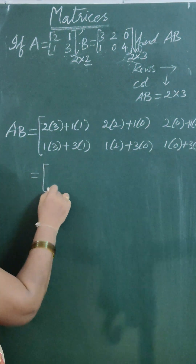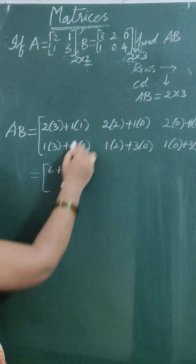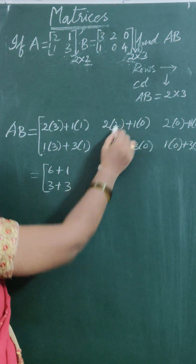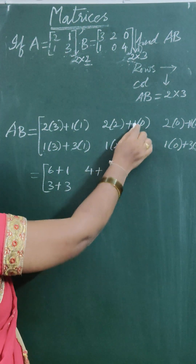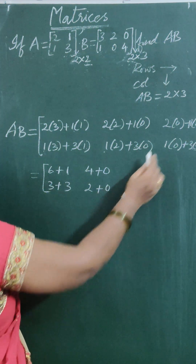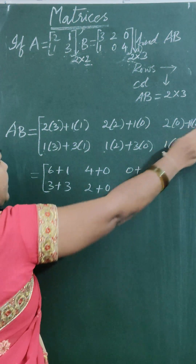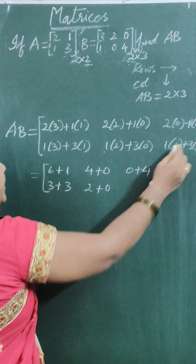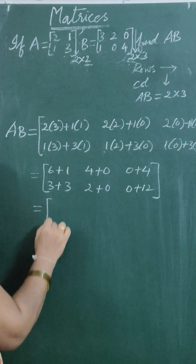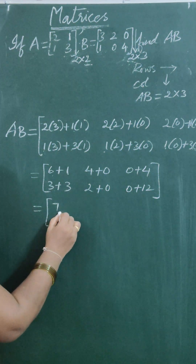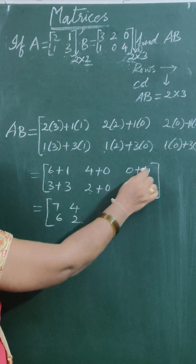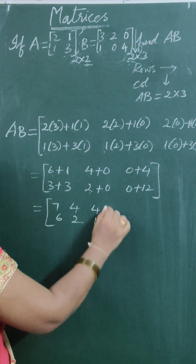That is: 2 into 3 is 6 plus 1 into 1 is 1. 1 into 3 is 3 plus 3 into 1 is 3. 2 into 2 is 4 plus 1 into 0 is 0. 1 into 2 is 2 plus 3 into 0 is 0. 2 into 0 is 0 plus 1 into 4 is 4. 1 into 0 is 0 plus 3 into 4 is 12. That gives: 6 plus 1 is 7, 3 plus 3 is 6, 4 plus 0 is 4, 2 plus 0 is 2, 0 plus 4 is 4, 0 plus 12 is 12.